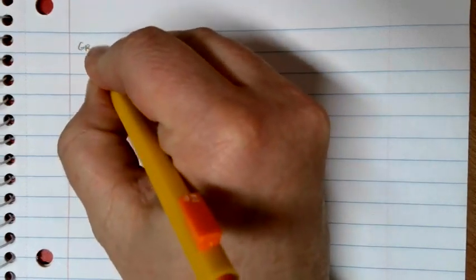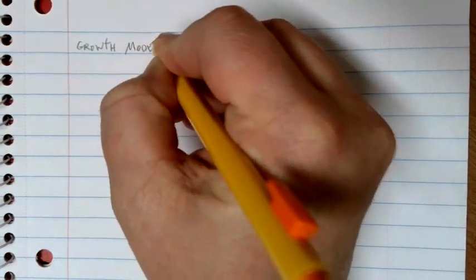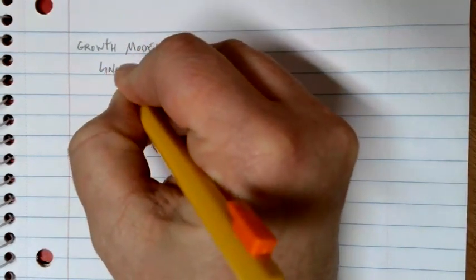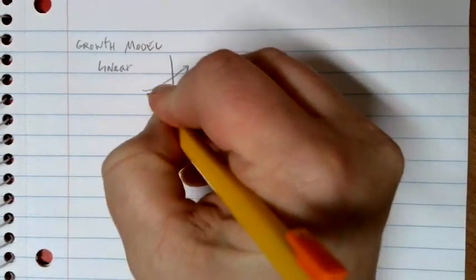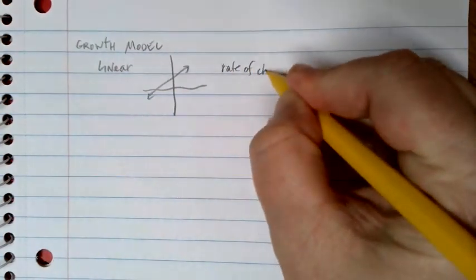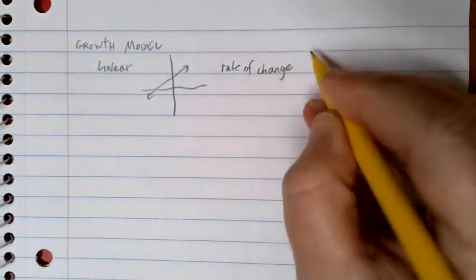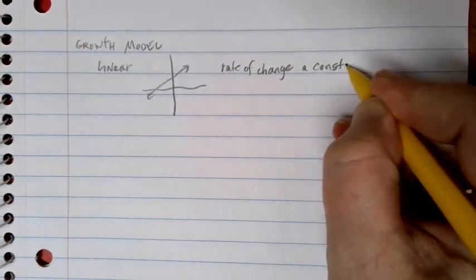In our study of growth models so far, we started with linear. A linear growth model had a special property, and that property was that the rate of change occurred by a constant numbered amount.